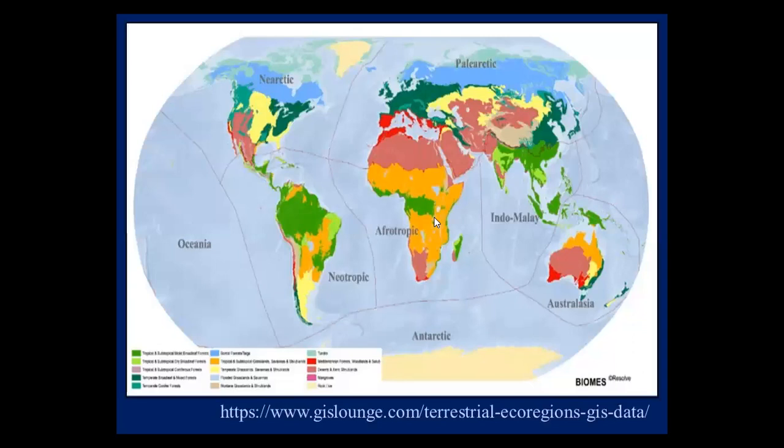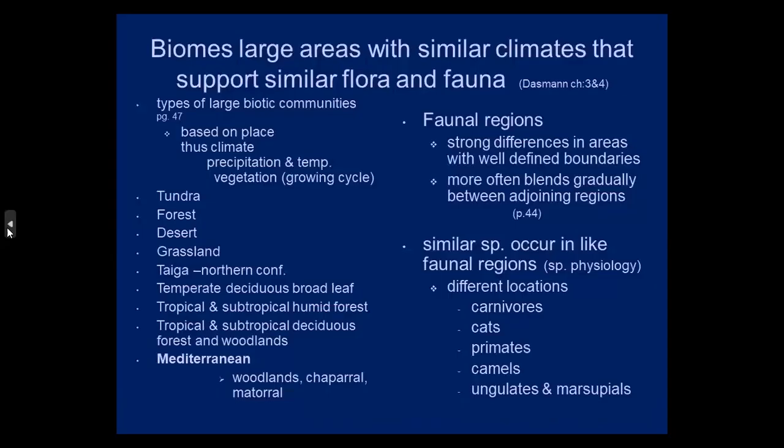Going back to the last slide: the Palearctic, the Nearctic, the Neotropics, the Afrotropics, Indomalaya, Australasia — which includes New Zealand, Australia, Papua New Guinea — Antarctica, and the ocean. These are all different, large biomes.